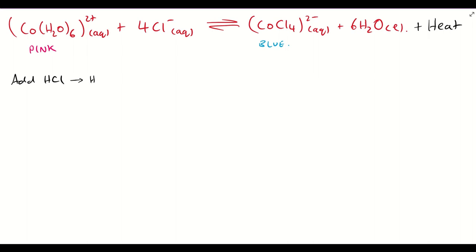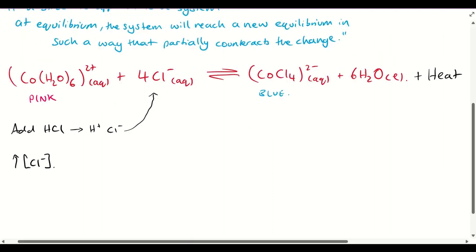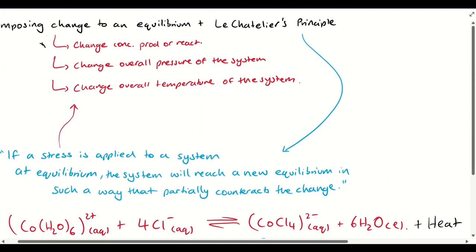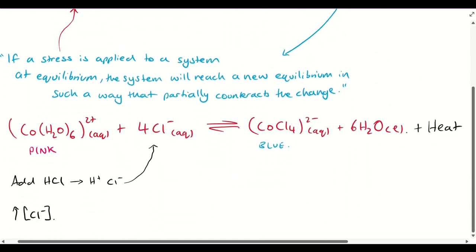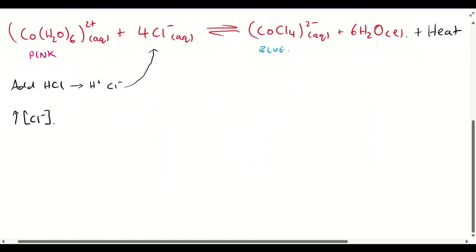If we add hydrochloric acid, what are we really adding to the system? We're adding lots of H⁺ and Cl⁻. We're adding lots of chloride ions, and our chloride ions are in our reaction. So it's our chloride ions that we're going to be interested in. If we add hydrochloric acid, we're increasing the concentration of chloride ions. So this is taking a look at changing the concentration of products or reactants — in this case by adding hydrochloric acid.